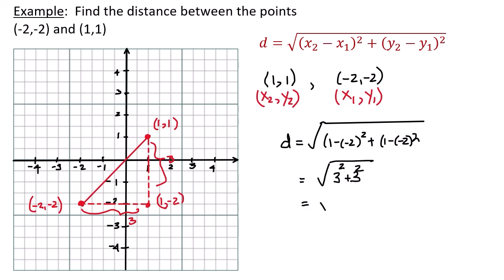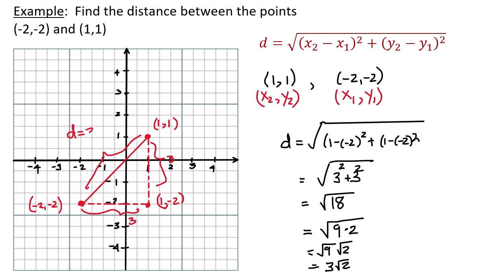That gives me the square root of 18. I need to simplify that. Since 18 = 9 × 2, the square root of 18 equals the square root of 9 times the square root of 2, which is 3√2. So the distance between the two points is d = 3√2.